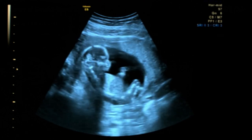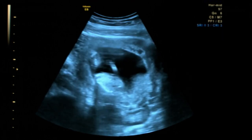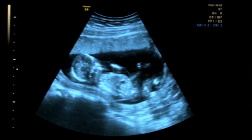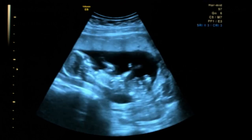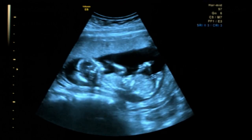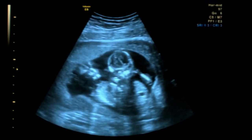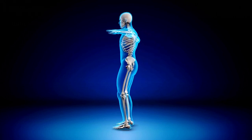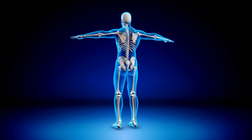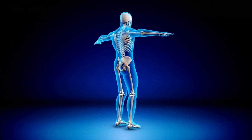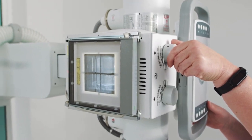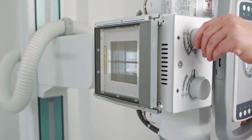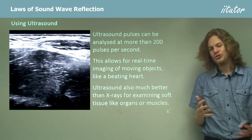For example, we can use ultrasound to look at a beating heart and see exactly how it's beating, and we can also use it to look at unborn embryos or fetuses. In some aspects ultrasound is much better than x-rays. X-rays are quick and high-resolution, but they're only really good at measuring the hard parts of the body — the bones — and it's very difficult to image a beating heart with a single x-ray. Also, because x-rays have much higher energy than ultrasound, they can be unsafe if used too much, so we can't fire 200 x-ray pulses per second or use them on sensitive organs or fetuses.